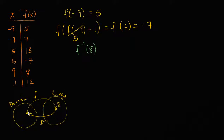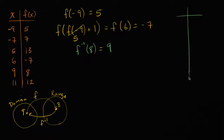So, f inverse of eight — this is whatever maps to eight. If this was eight, we have to say, well, what mapped to eight? Well, we see here, f of nine is eight. So f inverse of eight is going to be equal to nine. And if it makes it easier, we could actually construct a table here. What I'd essentially do is swap these two columns. So, f of x goes from negative nine to five — f inverse of x is going to go from five to negative nine. All I did is I swapped these two.